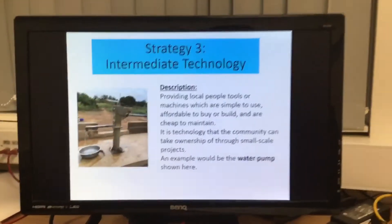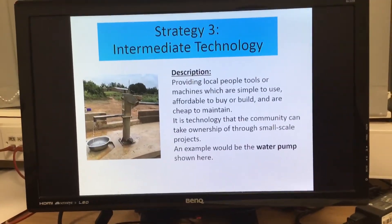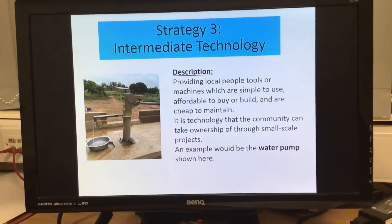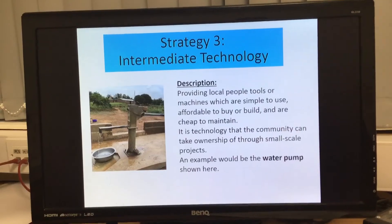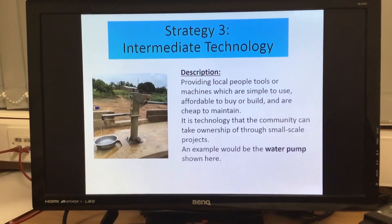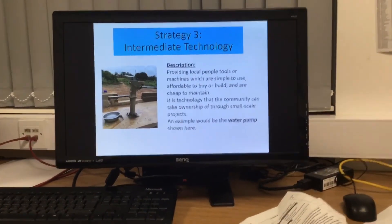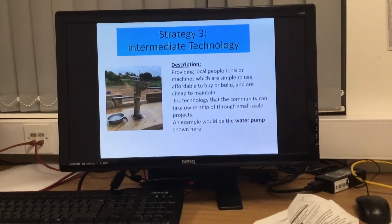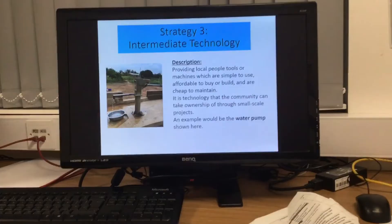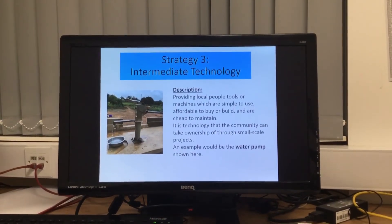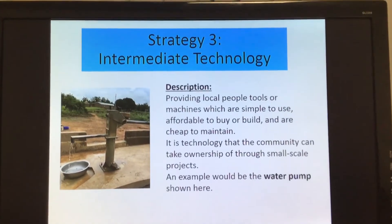The third strategy is intermediate technology. This is where local people are provided with tools or machines that are simple to use, affordable, and cheap to maintain. The idea is that local people will take ownership of the project and be able to help improve their own quality of life. For example, providing a tractor is unrealistic because people probably won't be able to use or maintain it well. Whereas providing something like a water pump or simple farm tools means local people can use them successfully and sustainably over a long period of time.